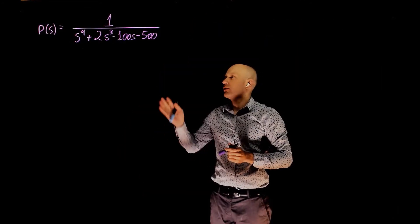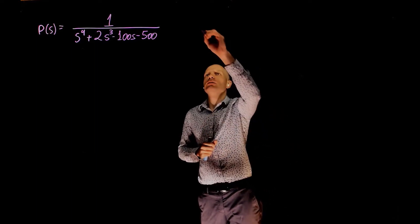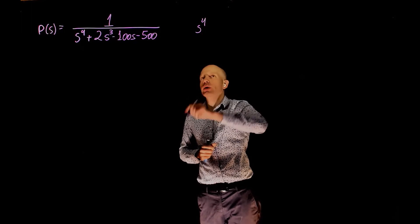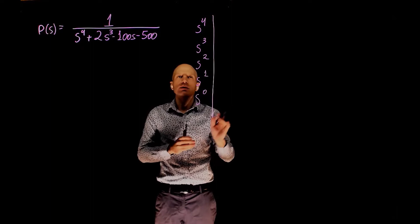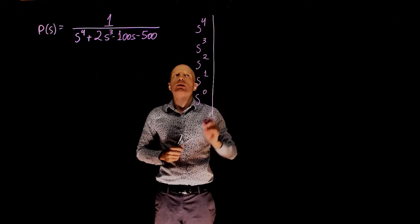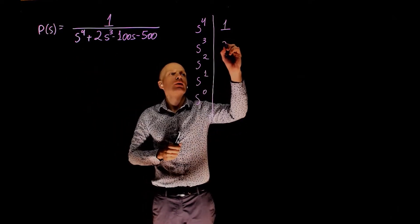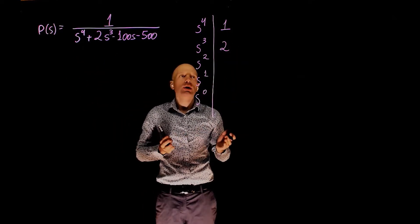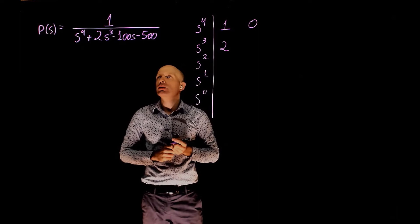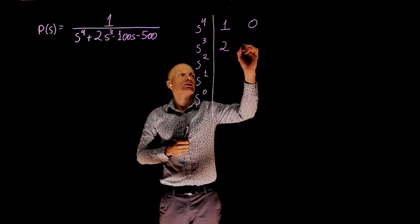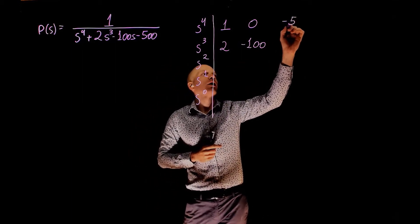In this next example we have a fourth-order differential equation. Let's start with the Routh array, which begins at the power of 4, all the way to the power of 0. Filling in the coefficients: s to the power of 4 is 1, s to the power of 3 is 2, s to the power of 2 is 0 — important to include even though it's absent — s to the power of 1 is negative 100, and s to the power of 0 is negative 500.